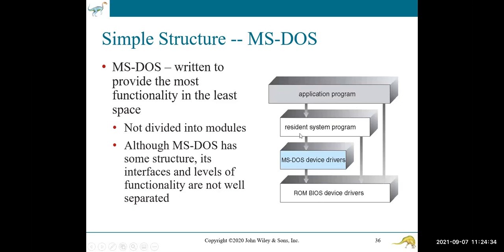In MS-DOS, you have applications and a resident system program — the equivalent in modern terms would be a service or process that's running. Things running in resident memory: DOS can only allow one thing to happen at a time. If you're juggling tasks in DOS, you have to keep that task in a holding pattern through resident memory. There were a lot of limitations with DOS — the levels of functionality are not well separated. MS-DOS was a very limited and simple structure that didn't isolate components very well.